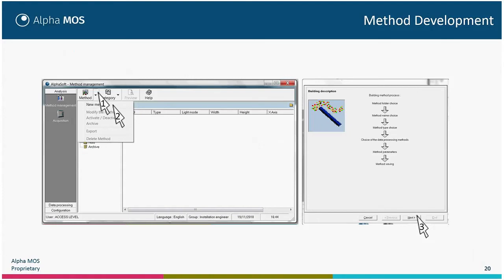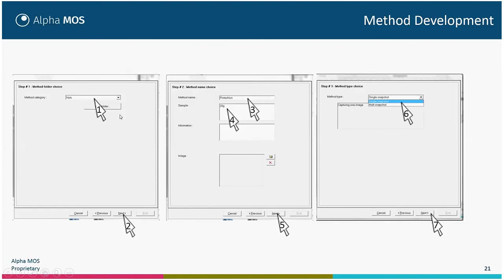In order to get an acquisition, you must first create a method for each product. You will set parameters to do the acquisition and data treatment always the same way. These acquisition and treatment parameters are gathered in what we call the method. For this, click on Analysis > Method > New Method. It will open a method wizard. Click Next, select the method category, then click Next. Enter the name of the method and the sample matrix. I advise setting a precise matrix to have repeatable analysis.